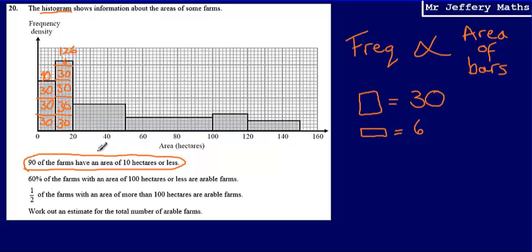The reason I'm doing this is to figure out how many farms there are in total, then work out 60% of the farms with an area of less than 100 hectares and half of those with more than 100 hectares, which will give me an estimate for the total number of arable farms.